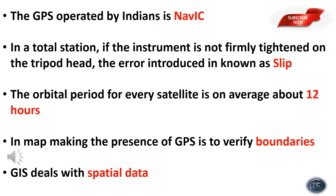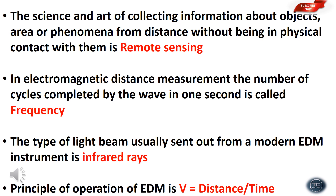In mapmaking, the use of GPS is to verify boundaries. GIS deals with spatial data — GIS stands for Geographic Information System. The science and art of collecting information about objects, areas, or phenomena from a distance without physical contact is called remote sensing. In electromagnetic distance measurement, the number of cycles completed by the wave in one second is called frequency.